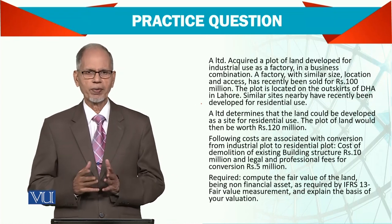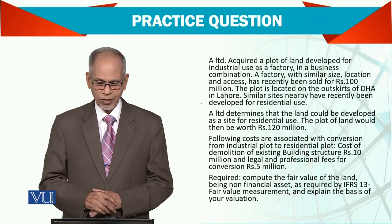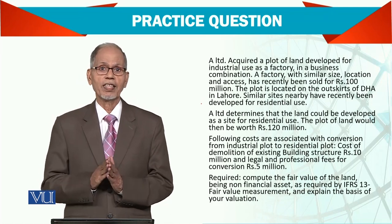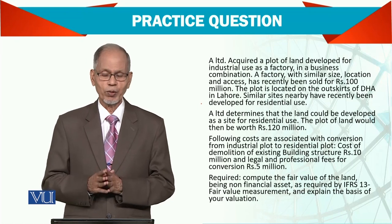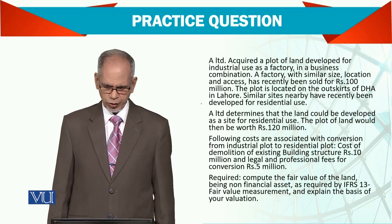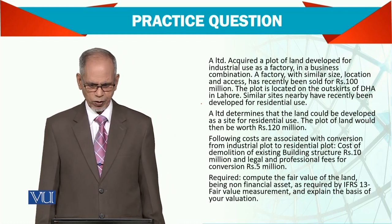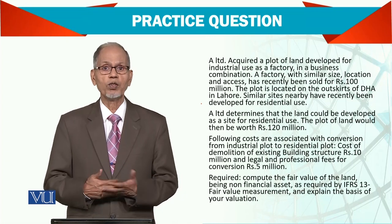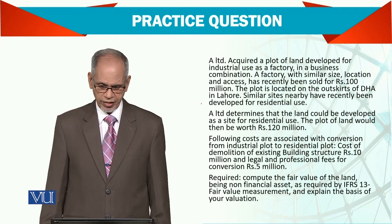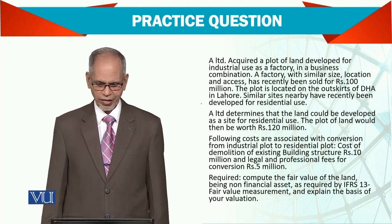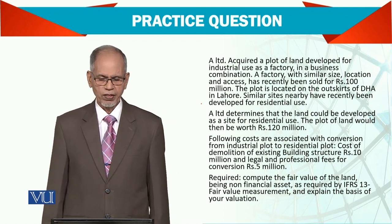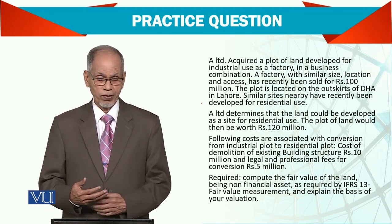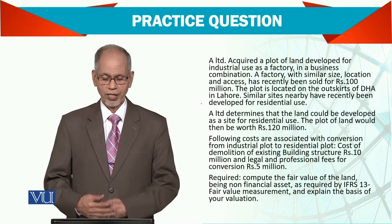When you develop it for residential purpose — perhaps a society — you will get a value of 120 million. So clearly there is an improvement; there is a fair value of 120. The following costs are associated with the conversion from industrial plot to residential plot: cost of demolition of existing building structure of 10 million, and legal and processing fee for conversion of 5 million. So you have to incur 15 million if you want to shift from factory area to residential area.